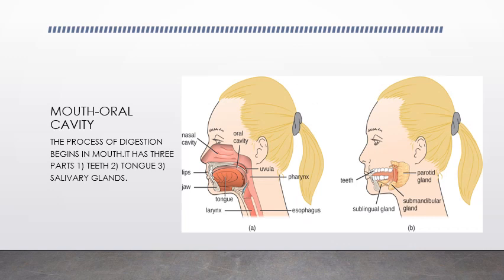The first part of the digestive system is the mouth, also called the oral cavity. The process of digestion begins in the mouth. The mouth consists of three parts: teeth, tongue, and salivary glands. The tongue helps us taste different types of food, and the salivary glands secrete saliva which is helpful for the digestion of food.